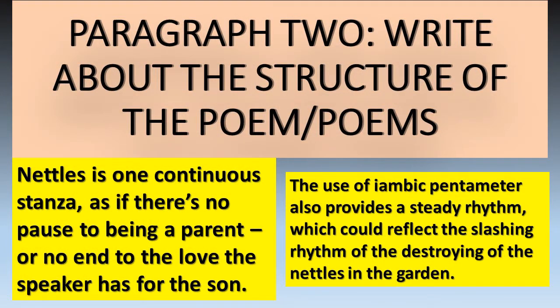Paragraph two is where you explore the structure. Nettles is one continuous stanza — it's just one big long verse, as if there's no pause to being a parent or no end to the love the speaker has for his son. You've got to try and link that to the themes and ideas. So why is it one long verse? Maybe it's because love for your children never ends — and that's why it's one unending stanza. That's where you get your marks by coming up with something technically interesting to say about the structure.